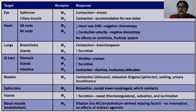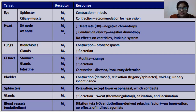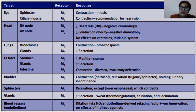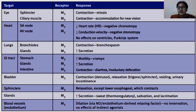For ciliary muscles, muscarinic causes contraction for accommodation for near vision, while anti-muscarinic would relax them — the person would have trouble seeing near objects. For the SA and AV node, muscarinic gives negative chronotropy, negative dromotropy, negative inotropy. Anti-muscarinic would be the opposite — positive — heart rate and conduction velocity would shoot up. For bronchioles in the lungs, muscarinic causes contraction; anti-muscarinic would relax and dilate them.